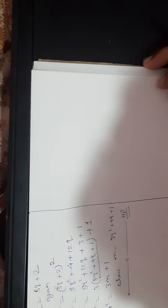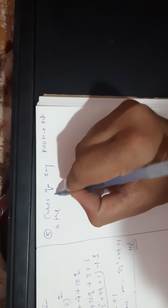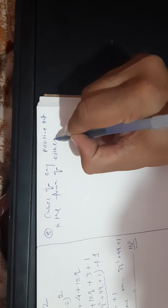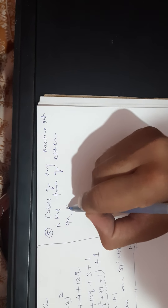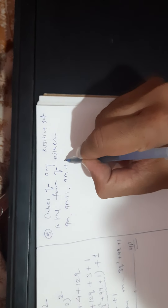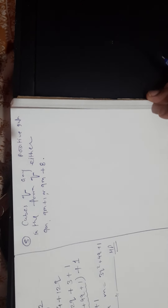Hope students you got that — this was a very important question. Now we have a similar question, question number 5, and we want to do it in a very quick way. By Euclid's Division Lemma, show that the cube of any positive integer is in the form of either 9m, 9m+1, or 9m+8.